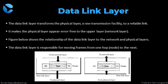Data link layer transforms the physical layer, a raw transmission facility, into a reliable link. It makes the physical layer appear error-free to the upper layer, that is the network layer. The figure in this slide shows the relationship of the data link layer to the network layer and the physical layer.